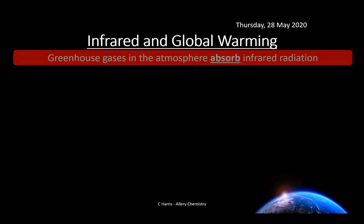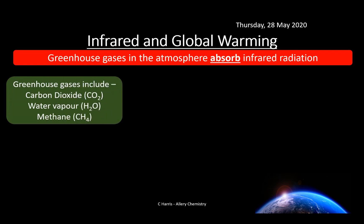Let's look at the link between infrared and global warming. Greenhouse gases in the atmosphere absorb infrared radiation. Greenhouse gases include carbon dioxide, water vapour, and methane — molecules that have two different types of atoms. Water is a greenhouse gas, as you can observe with clouds. On a cloudy winter's day it's not as cold as on a clear crisp day — clouds act like a blanket. Methane and carbon dioxide are also greenhouse gases. Some are more potent than others, but all absorb infrared radiation.